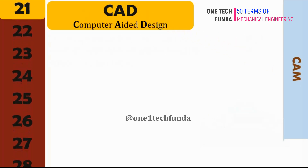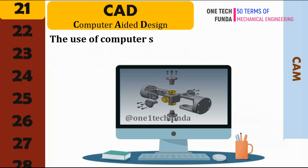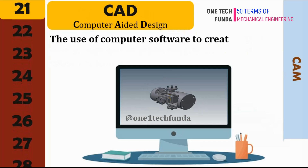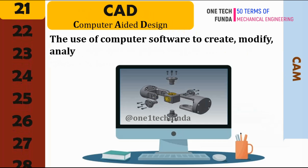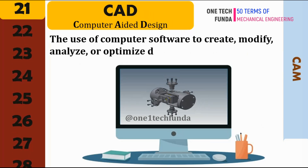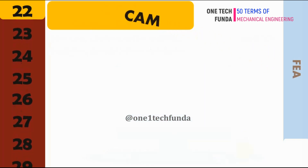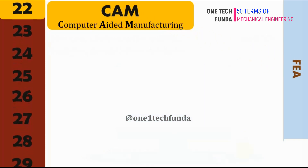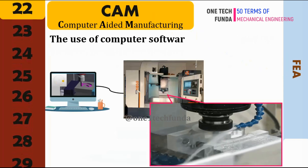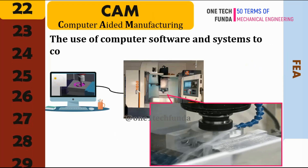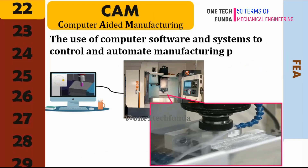CAD stands for Computer-Aided Design, which refers to the use of computer software to create, modify, analyze, or optimize designs. CAM stands for Computer-Aided Manufacturing, which is the use of computer software and systems to control and automate manufacturing processes.